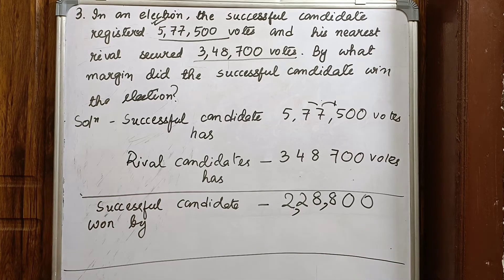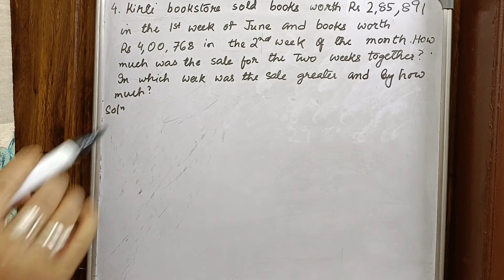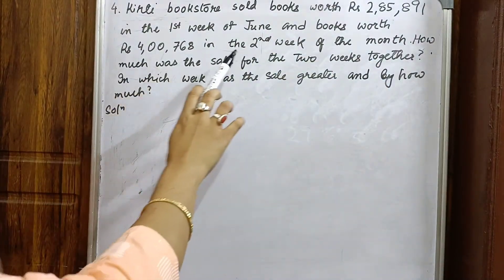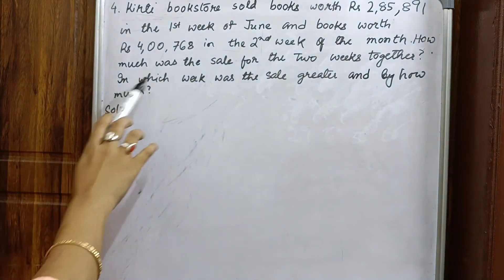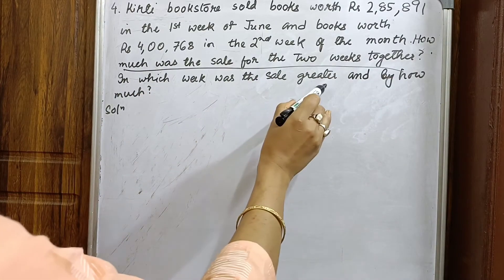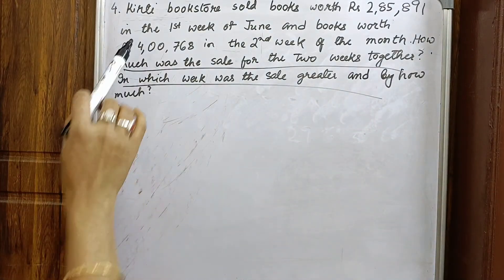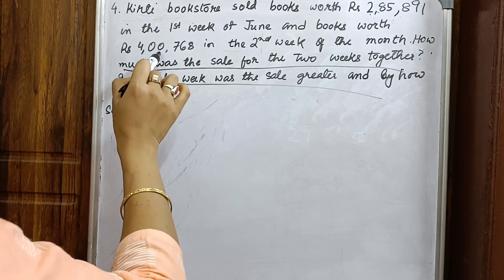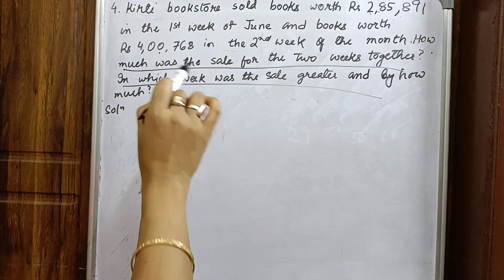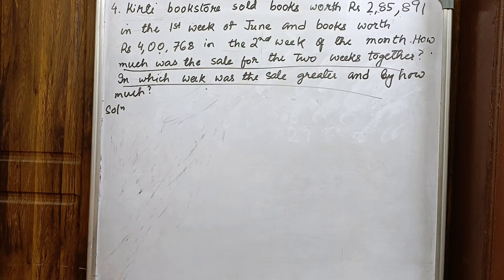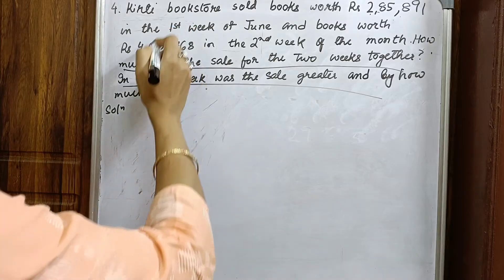Question four: Kirti Bookstore sold books worth a certain amount in the first week of June and books worth another amount in the second week. How much was the sale for the two weeks together? And in which week was the sale greater, and by how much? First we'll find the total sales for both weeks.